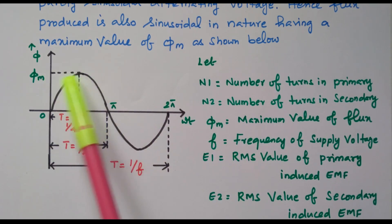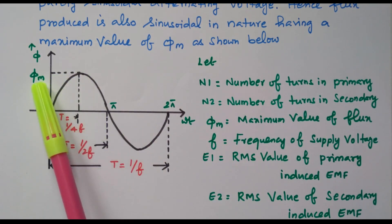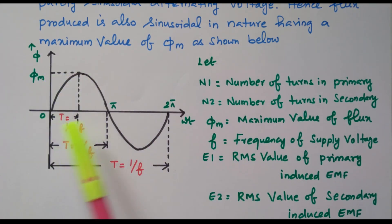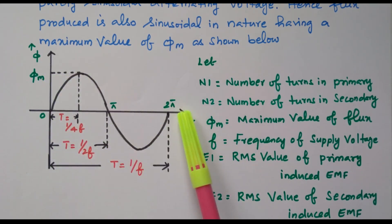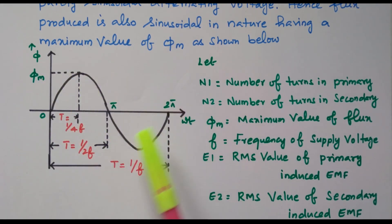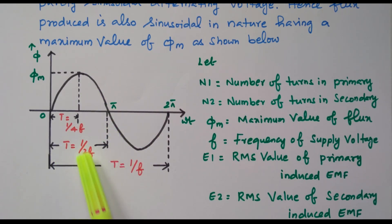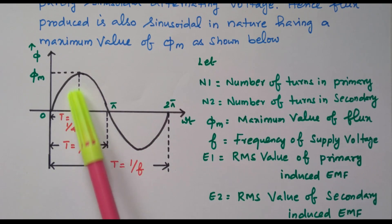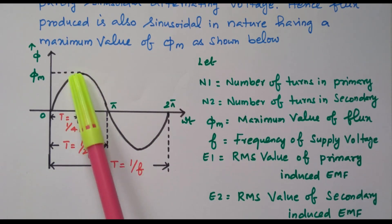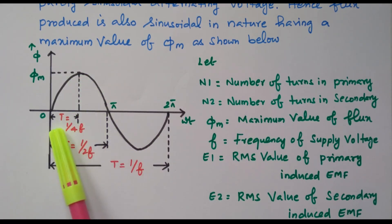The maximum value of flux is φM, and a full cycle from 0 to 2π is available. The time period T is equal to 1/F. For half cycle it is 1/(2F), and if we consider one-fourth of the cycle, it is T equal to 1/(4F).